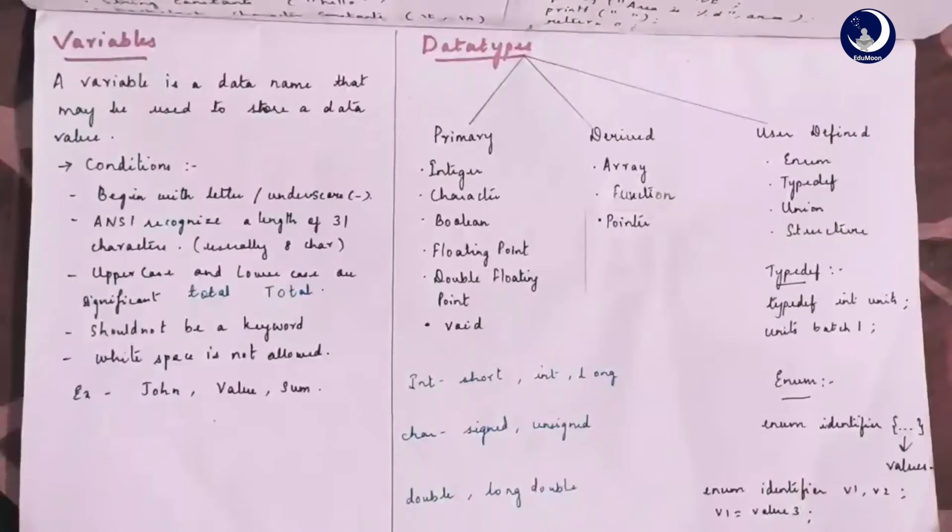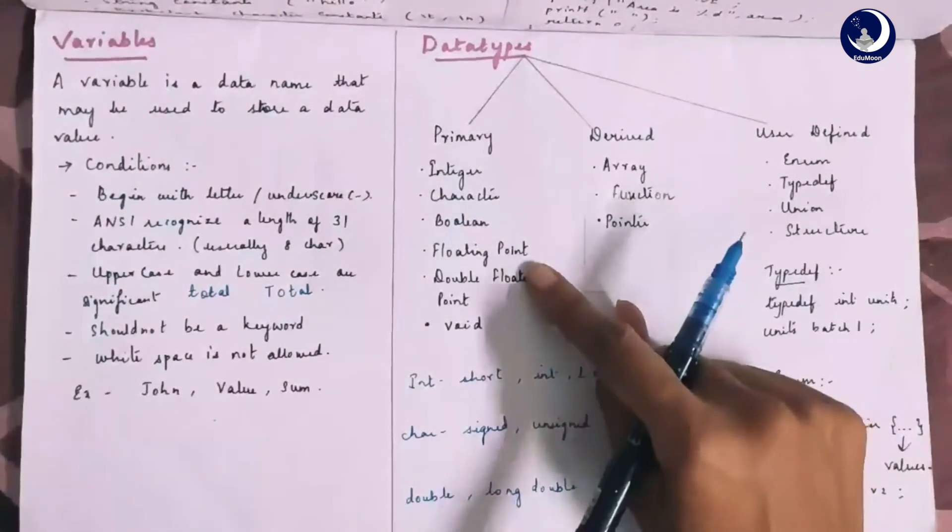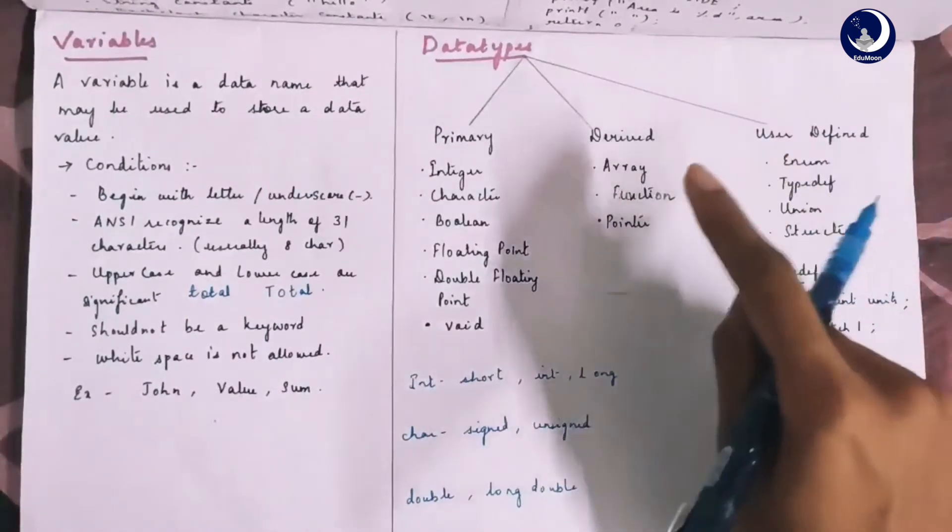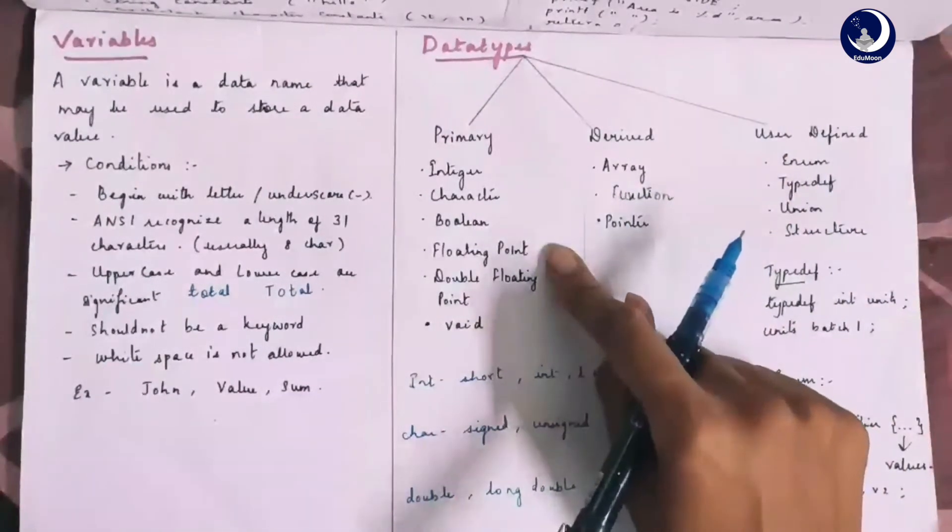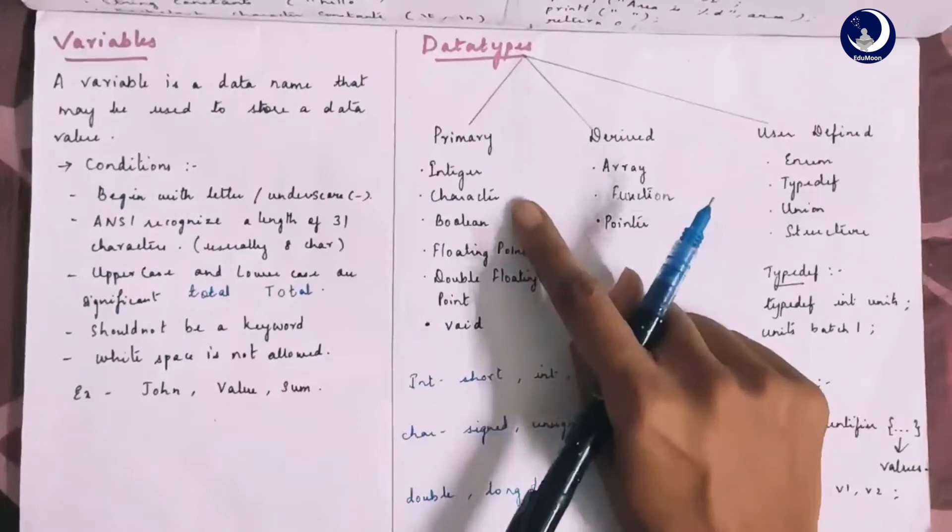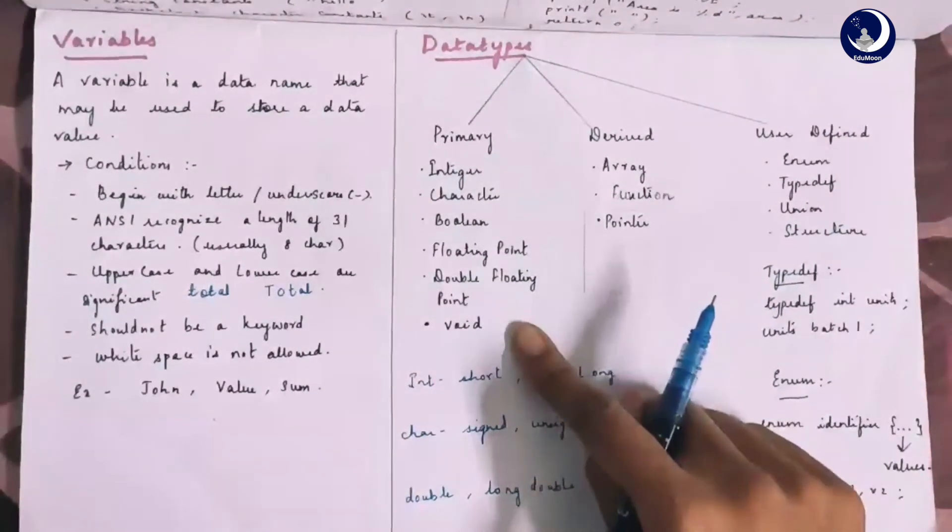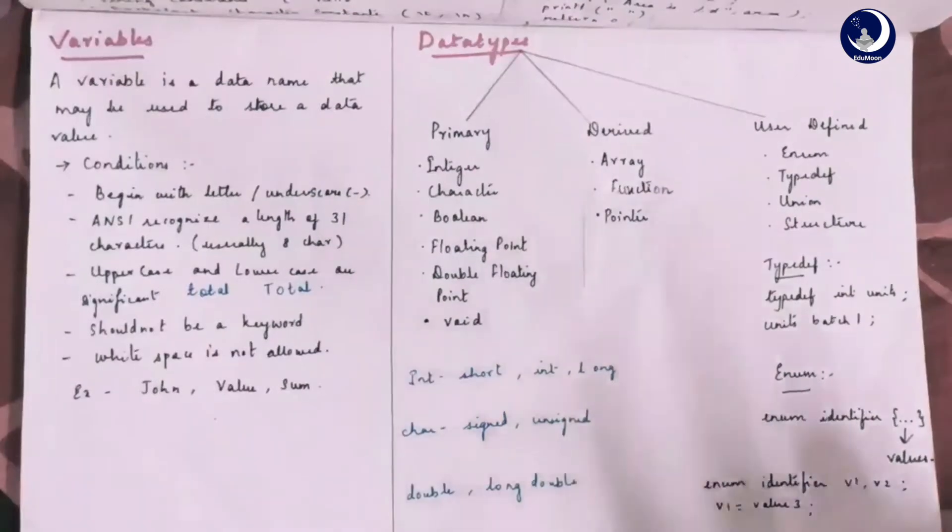Data types. C language is rich in its data types. C supports three classes of data types. They are primary or fundamental data types, derived data types, and user defined data types. In primary data types, we have integer, character, boolean, float data type and void data type.